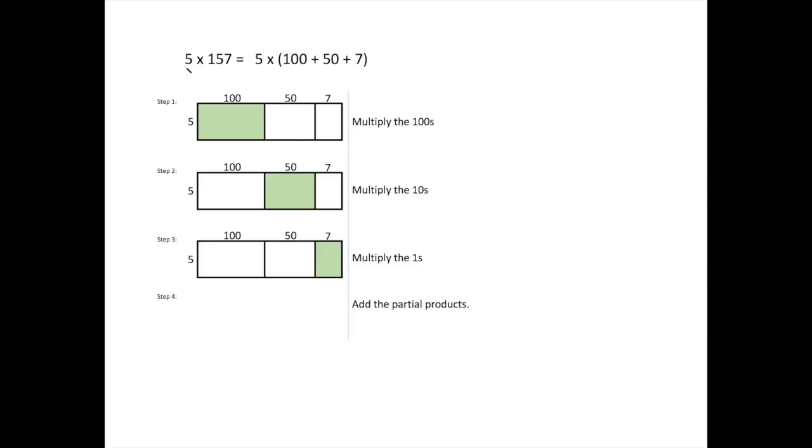So our problem today is 5 times 157. And the very first thing that we need to do before we can even set up our problem is we have to expand our larger number. So the one digit is actually 5 times 100 because it's in the hundreds place. Our tens digit is actually 5 times 50 because it's five tens. And then in our ones place, we have 5 times 7 because there's only seven in our ones place.